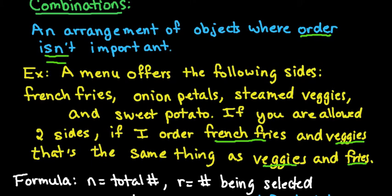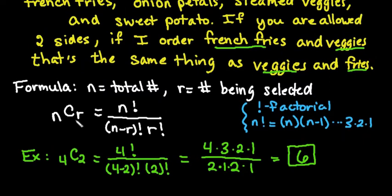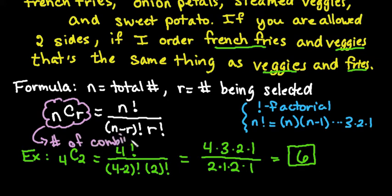So in a case like this, the order is not important. So the formula that we use for combinations is nCr. This is read as the number of combinations taken r at a time.